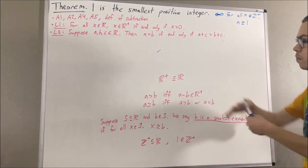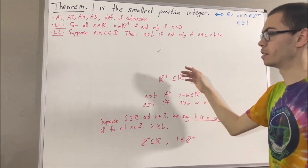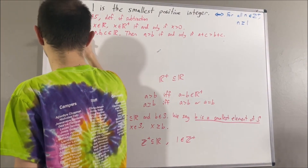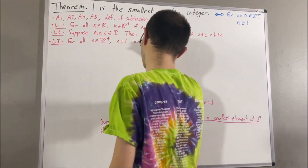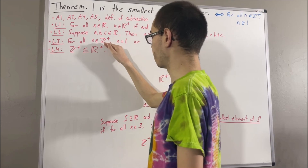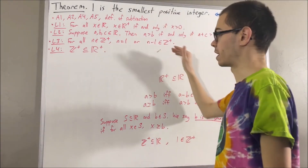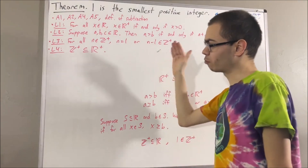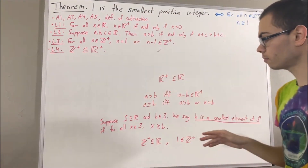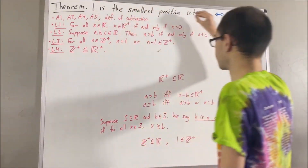In proving this theorem we will also use two results proven about the positive integers. First, for all positive integers n, n is equal to one or n minus one is a positive integer. Second, every positive integer is a positive real number. Now let's get to proving this theorem.